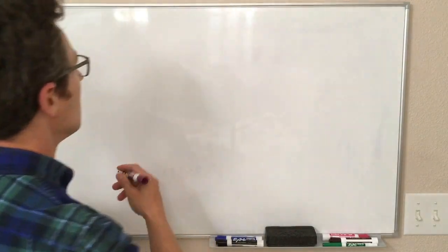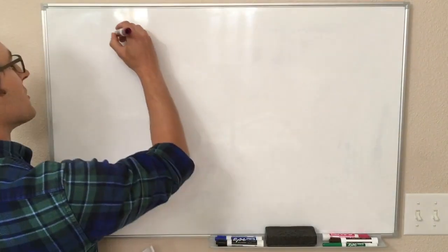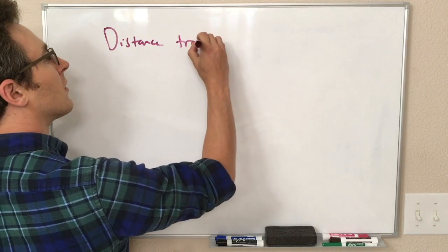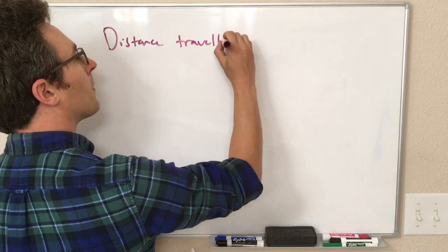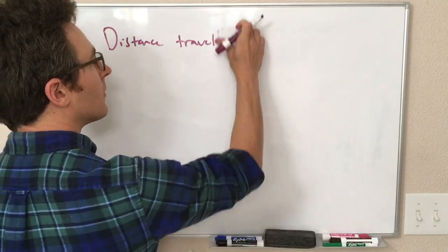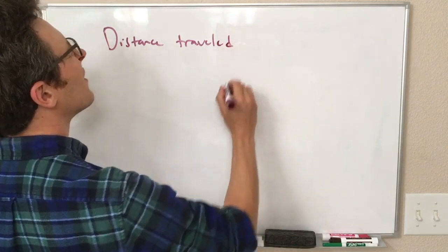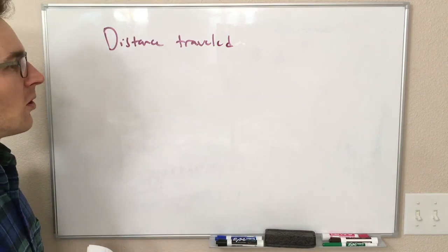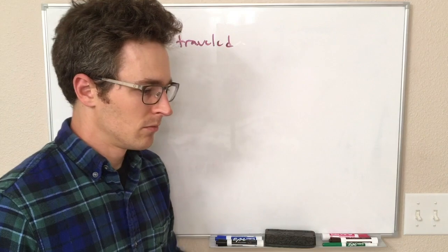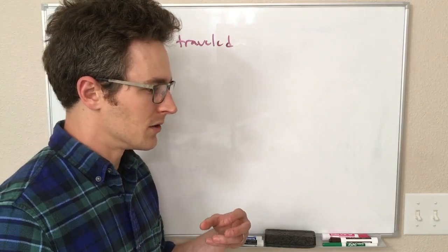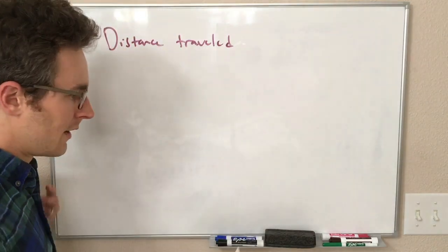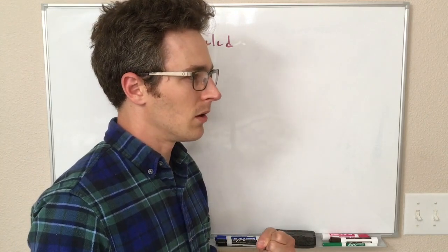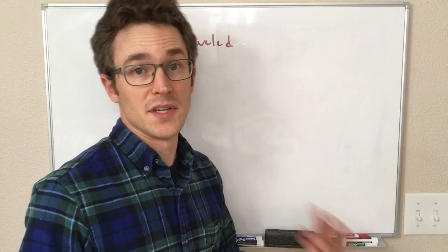Okay, the last concept related to position I wanted to talk about is distance traveled. So if we have an object that starts at some position and undergoes some motion and ended up back where it started, like we said, the displacement was zero, but it still traveled some distance, right?